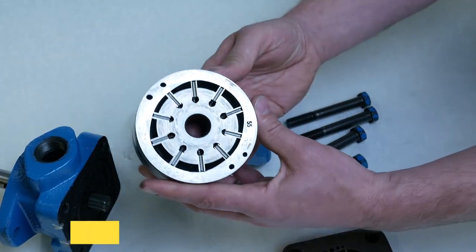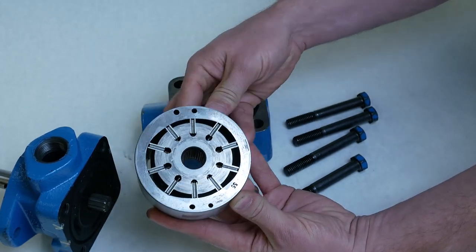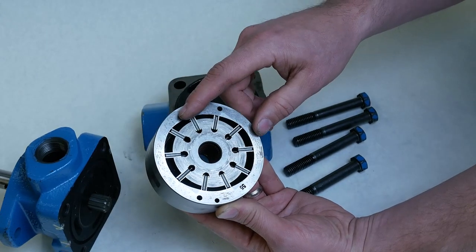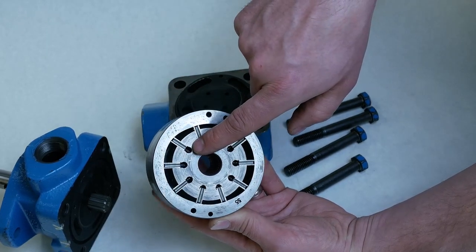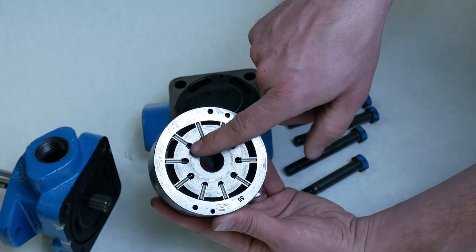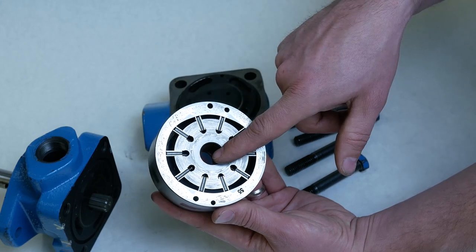Another example of a vane that is being pushed out, and this one's a double knife edged vane, again, in a balanced vane motor that's bi-directional. It has springs in behind these double knife edge vanes that are being pushed out against the cam ring.